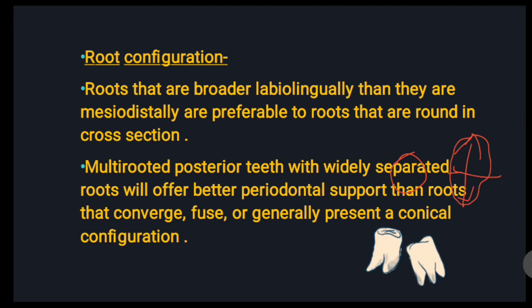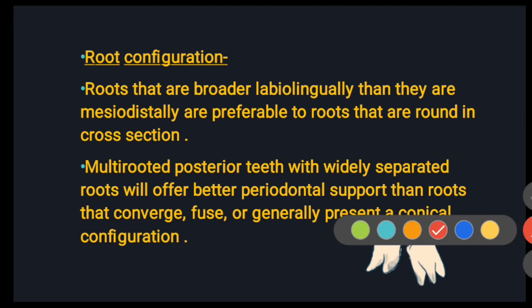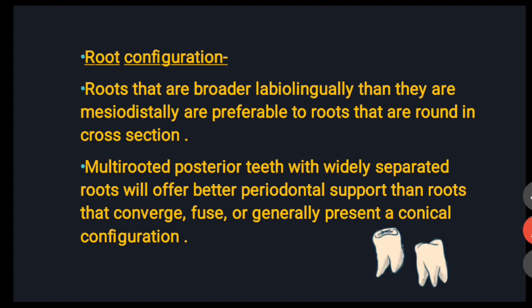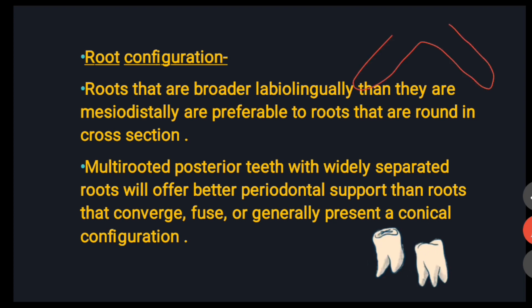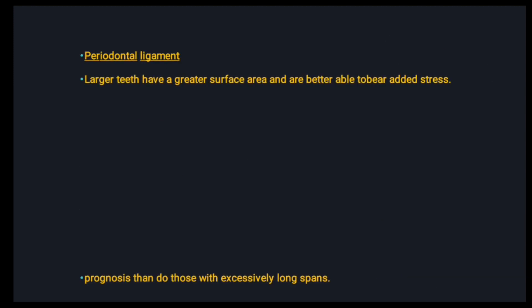A multi-rooted posterior tooth with widely separated roots provides better periodontal support than one with convergent or fused roots. A larger periodontal ligament surface area means the tooth will be able to bear added stress.